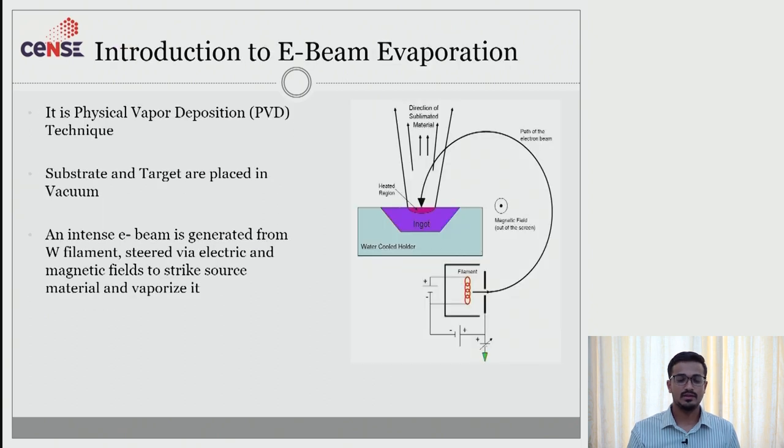Now let us move on to the introduction to e-beam evaporation. As I told earlier we use a chamber which is evacuated with the help of rotary pump and thermomolecular pump and we achieve a vacuum of e power minus 7 or minus 6. Also here we house a filament on which we provide a high potential difference and there will be a thermionic emission and there will be a generation of e-beam high energy electrons. And these high energy electrons are steered by electromagnetic fields to strike the source and evaporate it.